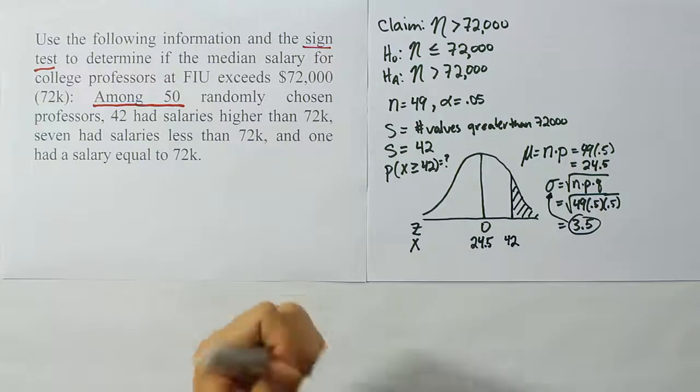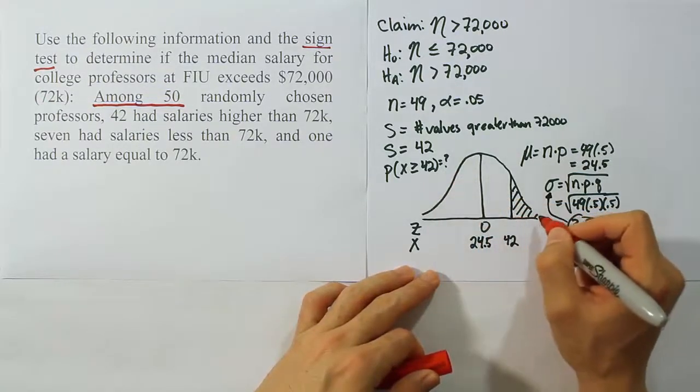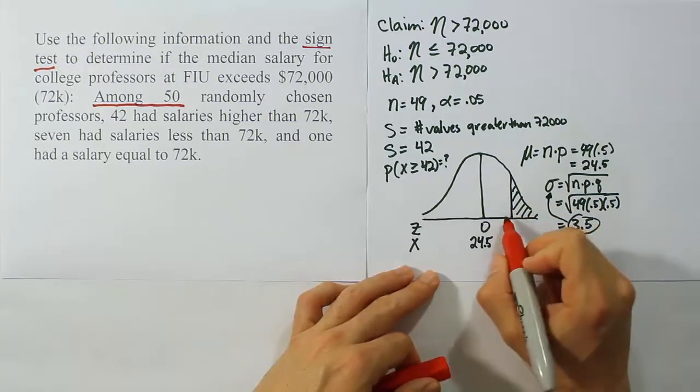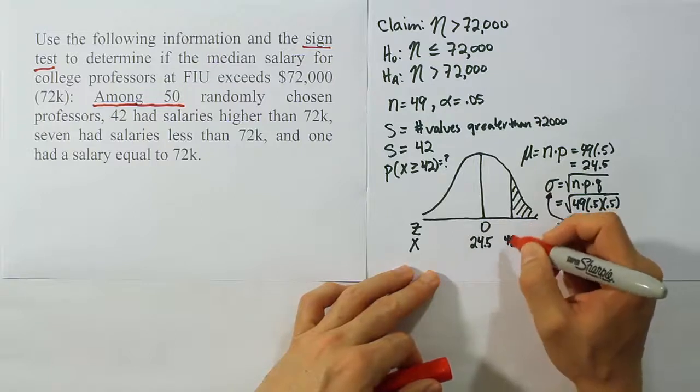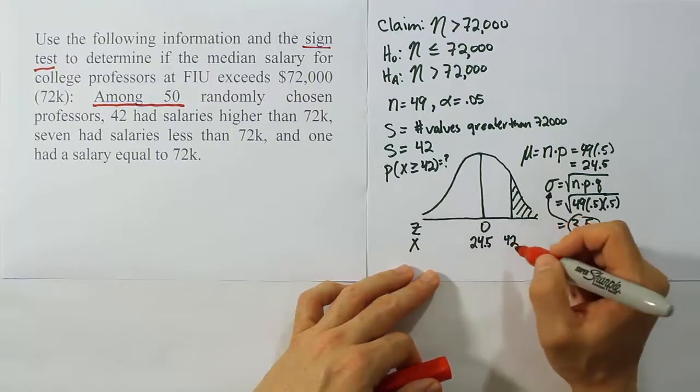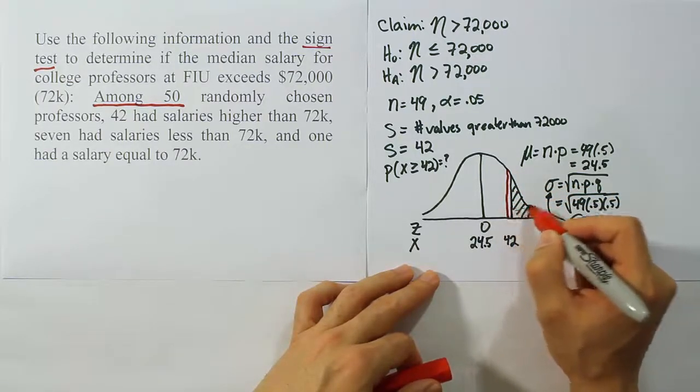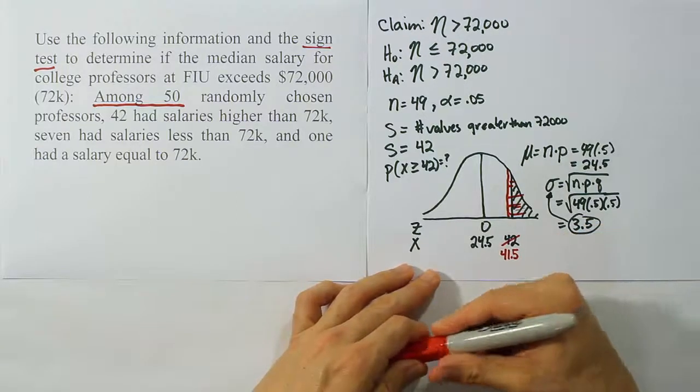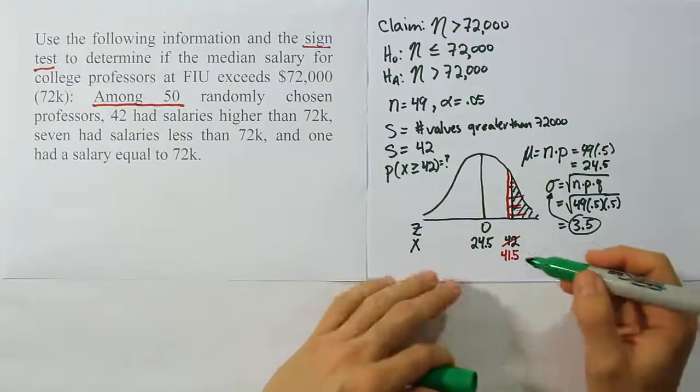Only one small detail though. When doing this type of problem with the binomial approximation, we don't want to use the exact number we have because if we're going to the right, we want to make sure that we start a little before the 42 to make sure we sweep up all the area. We're trying to approximate a discrete distribution by a continuous distribution. The little rectangles in discrete distribution for 42 would actually dip down to 41 and a half. So basically, we have to take away 0.5 from this by starting just a little bit before 42. So we're really going to use 41.5. That's called continuity correction.